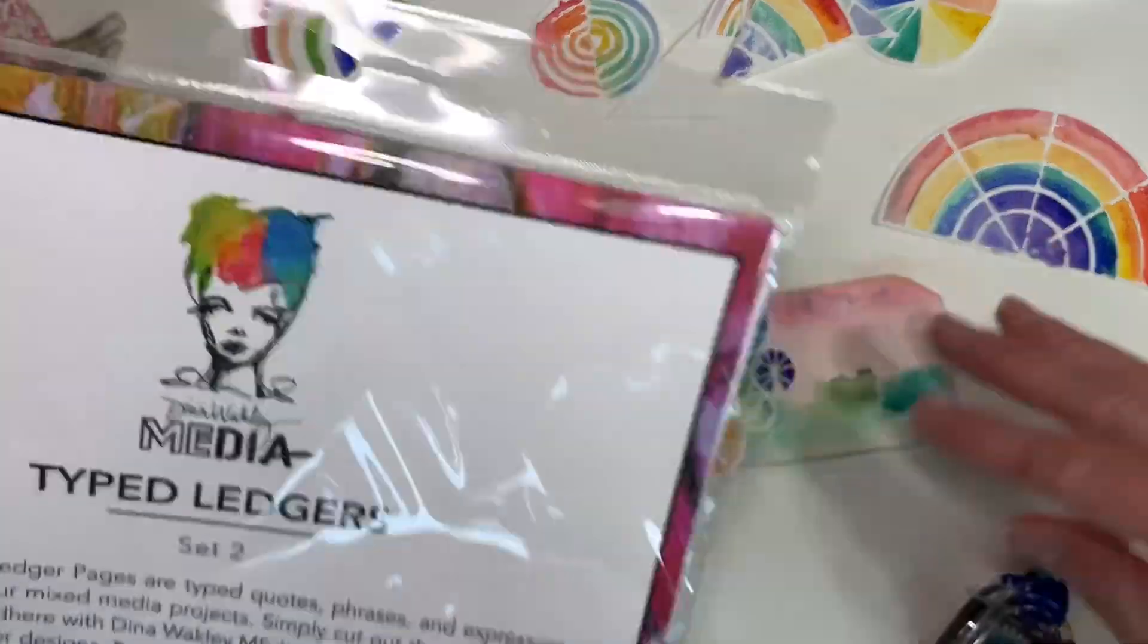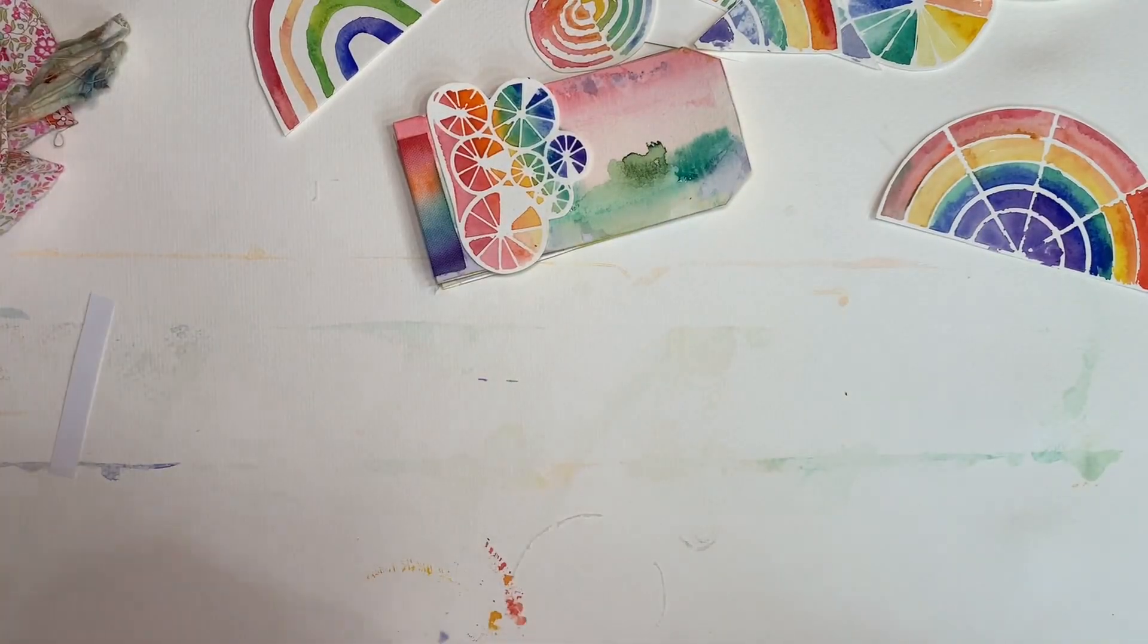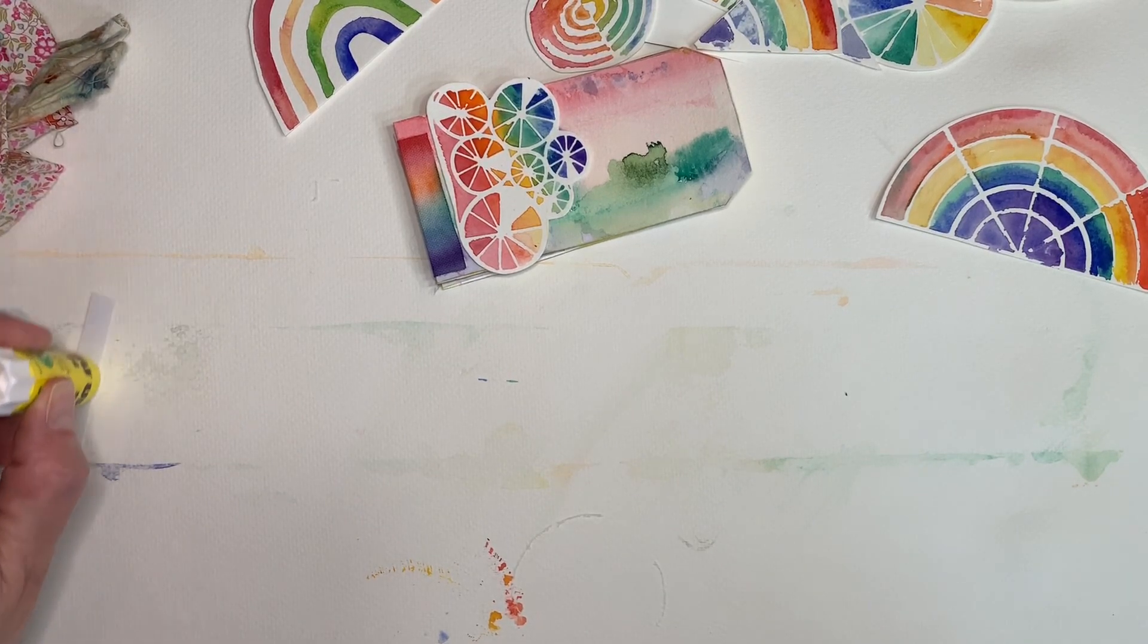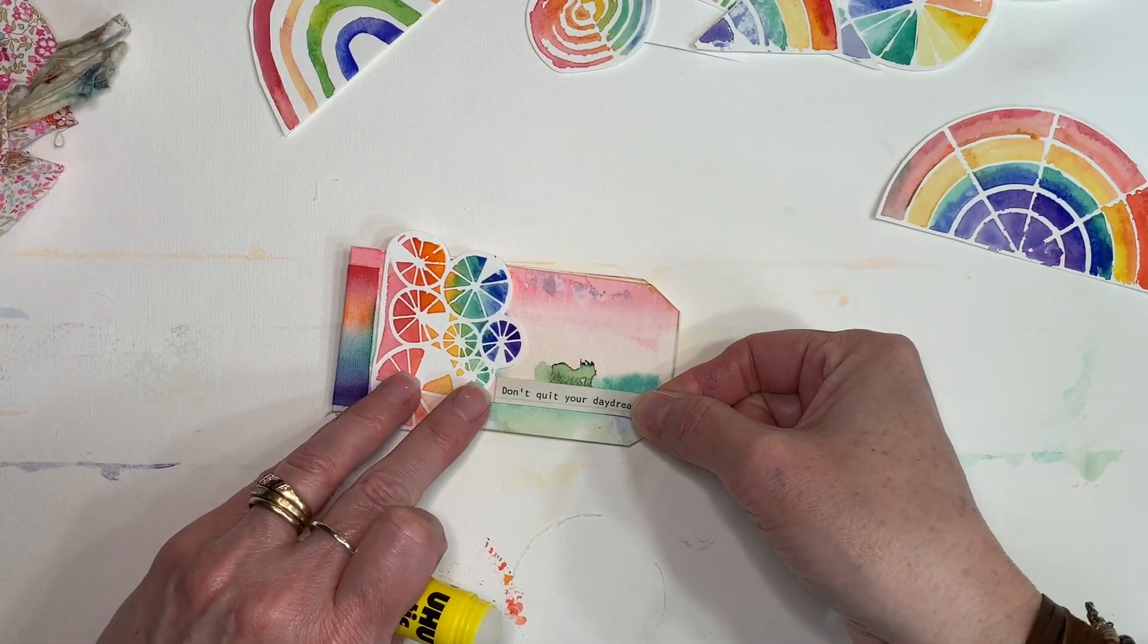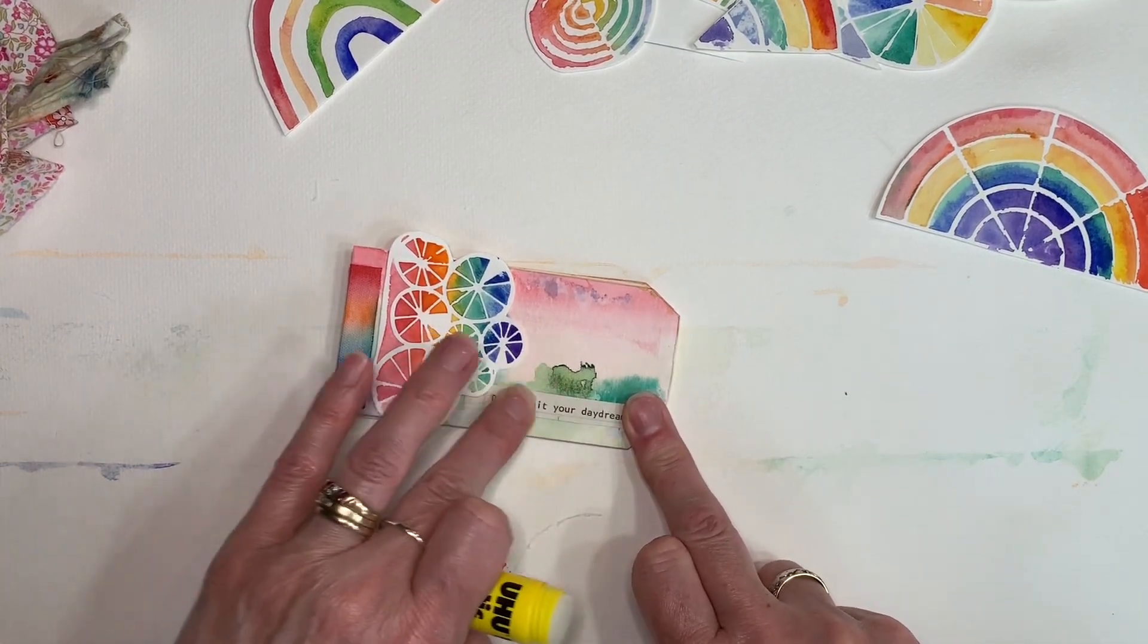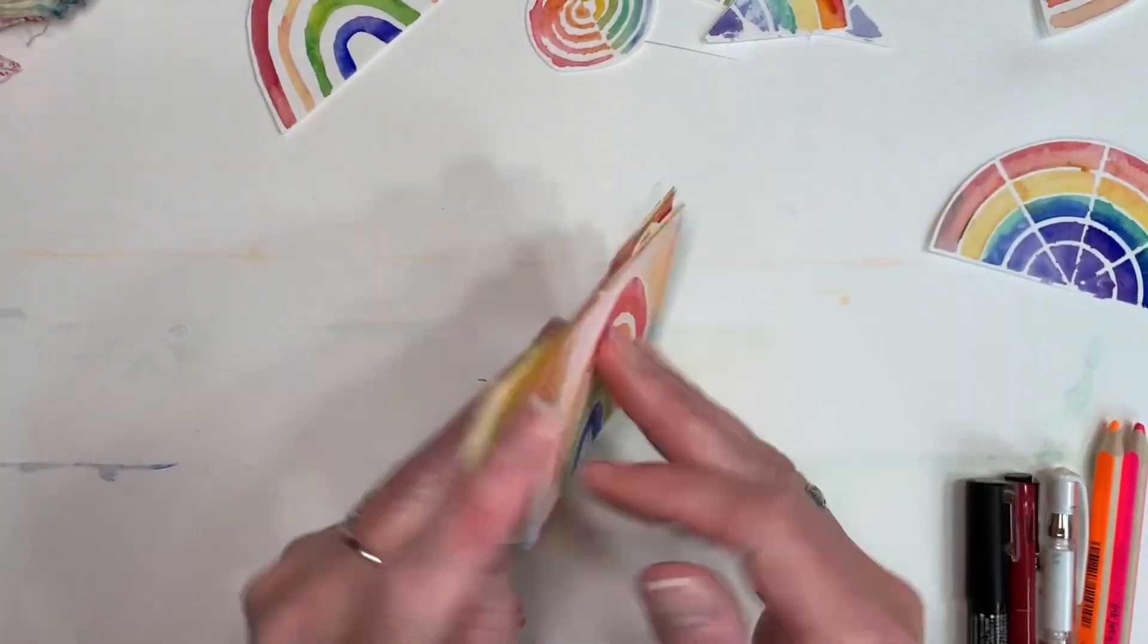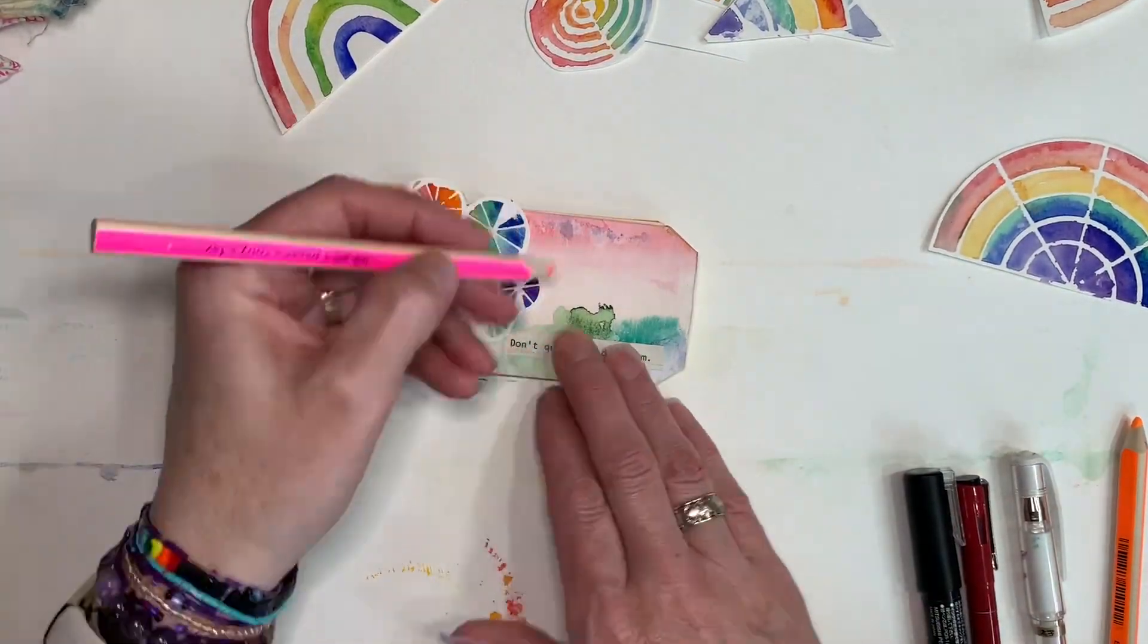Now that I have all of my elements, I use the Dina Wakeley typed ledger sheets to add all of the words for inside the book. These sheets are really helpful if you don't know what to say and you just want to put little quotes into your book. Those are awesome because they're already typed up for you. So I just went ahead, as I said, I added all kinds of words and sayings into this book to go with my rainbow theme. I wanted it to be full of positivity, which it is. And as you can see, added all kinds of words.